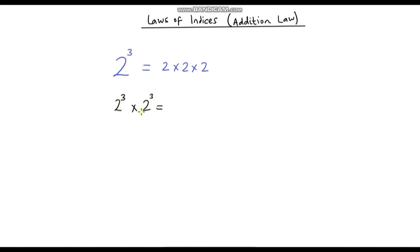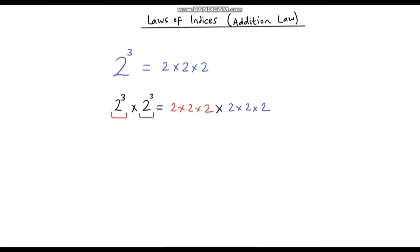Now let's look at 2 to the power 3 multiplied by 2 to the power 3. Instead of writing all of this out, we can simplify it as just one power of 2. The first part, 2 to the power 3, means 2 times 2 times 2, and we multiply that by another 2 times 2 times 2. So instead of writing 2 times 2 six times, we just write 2 to the power 6.